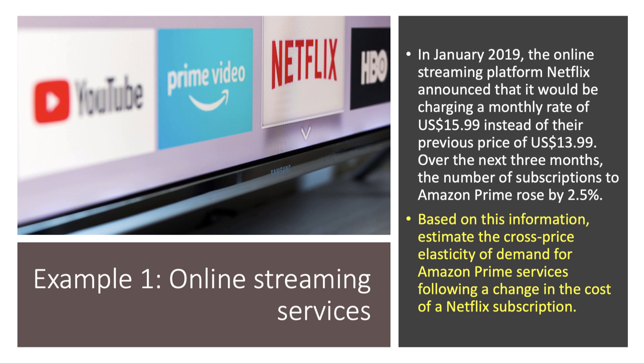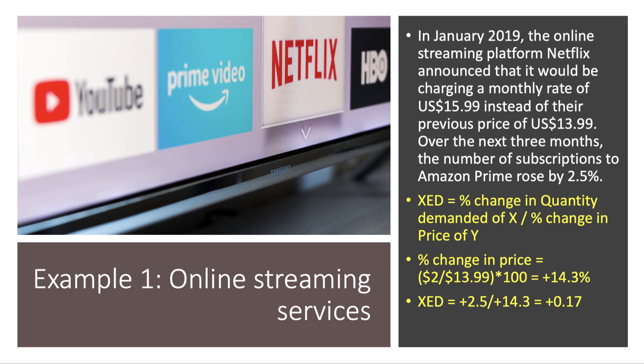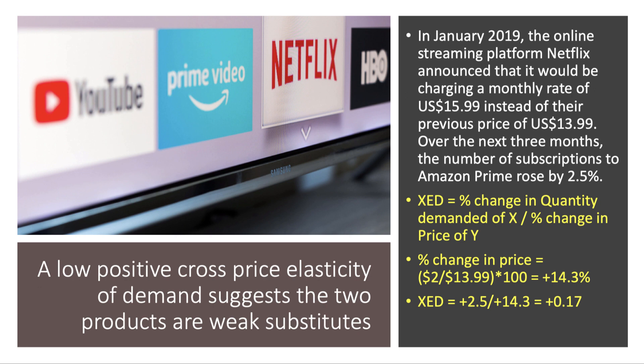Based on this information, estimate the cross-price elasticity of demand for Amazon Prime services following a change in the price of a Netflix subscription — a classic cross-price effect. We fit the formula: percentage change in quantity demanded divided by percentage change in the price of the related good. The Netflix subscription went up by $2 from $13.99 to $15.99, which comes to a plus 14.3% increase. Amazon Prime subscriptions increased by 2.5% set against that 14.3% hike, giving a coefficient of plus 0.17. This suggests a low but positive cross-price elasticity, indicating the two products are weak substitutes — perhaps there's a strong degree of brand loyalty towards the Netflix platform.